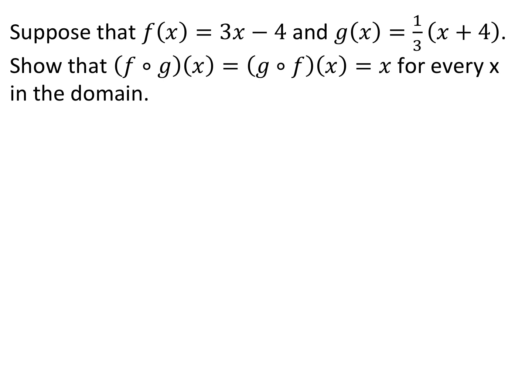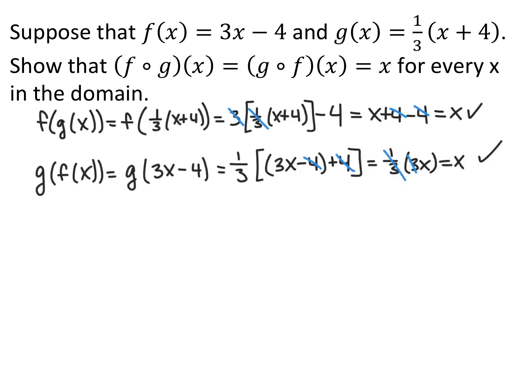Suppose f of x equals 3x minus 4 and g of x equals one-third x plus 4. Show that f composed with g of x equals g composed with f of x equals x for every x in the domain. For f composed with g of x, every time I see an x in f of x, I replace it with one-third x plus 4. So I get 3 times the quantity one-third x plus 4, minus 4. The 3 and one-third cancel, giving x plus 4 minus 4, which is x.